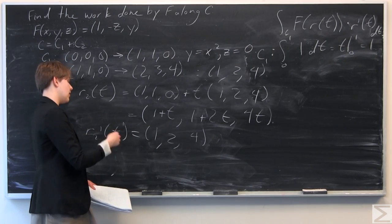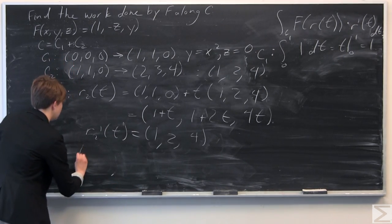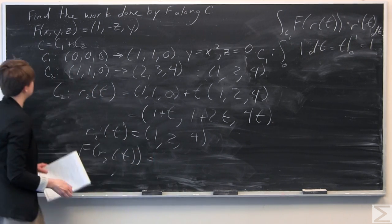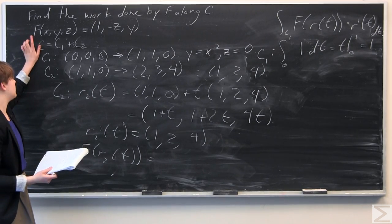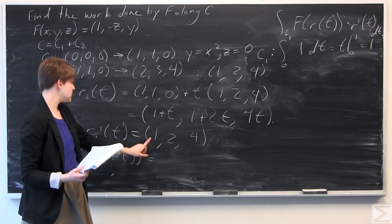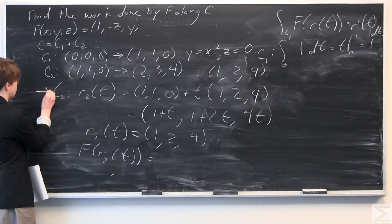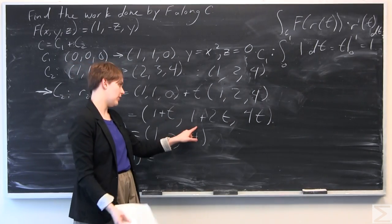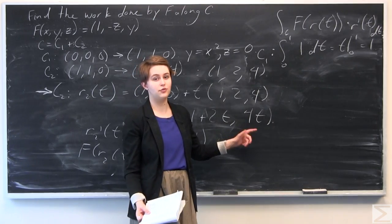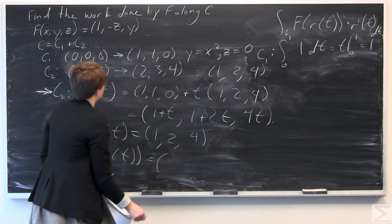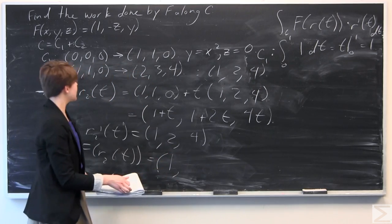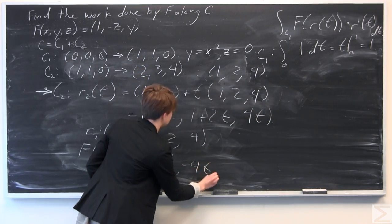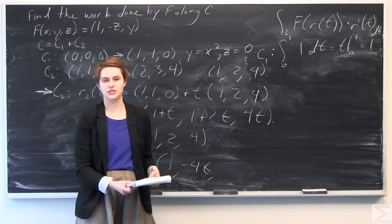Now we find F of R2 of T. Going back to F(x, y, z) equals (1, negative z, y) and substituting x equals 1 plus T, y equals 1 plus 2T, z equals 4T: the first component is 1, the second is negative 4T, and the third is 1 plus 2T. So F of R2 of T equals (1, negative 4T, 1 plus 2T).